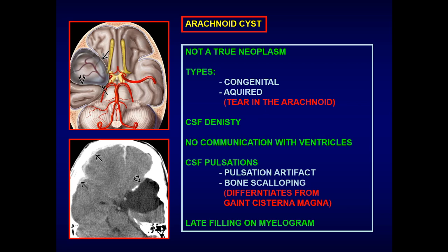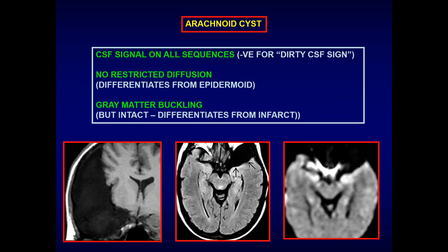Because of long-standing CSF pulsations on the subjacent bone, there will be associated bone scalloping and mild mass effect on the brain parenchyma from the cyst in the confined calvarium. Importantly, it still communicates with the CSF — so if you inject dye as in a myelogram, the CSF fills immediately with contrast whereas the cyst does not. On delayed examination, it also fills, confirming communication and confirming the diagnosis of arachnoid cyst.